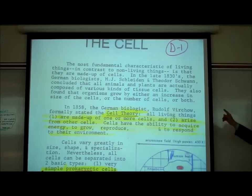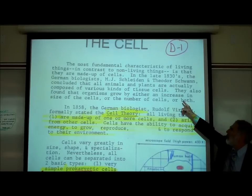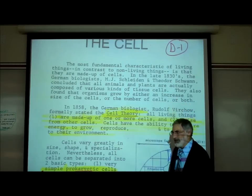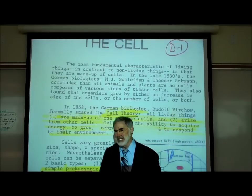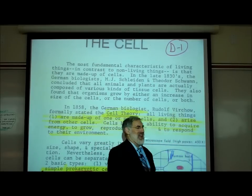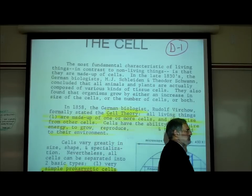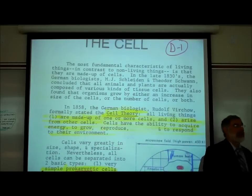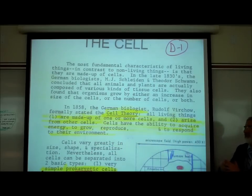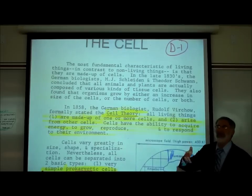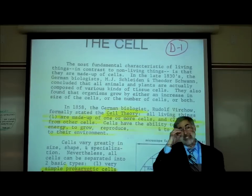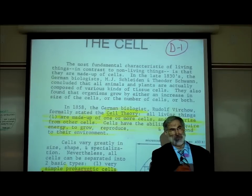They were Schleiden, Schwan, and Virchow. You don't have to know those names or the dates. Schleiden was a botanist, and every plant he examined with a magnifying lens, he said they were made up of cells.